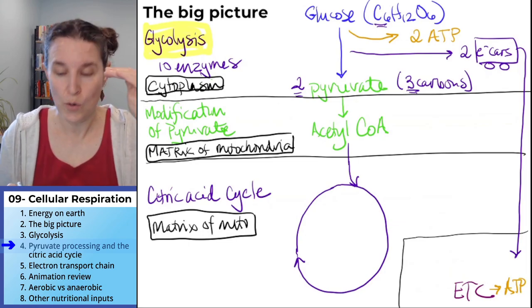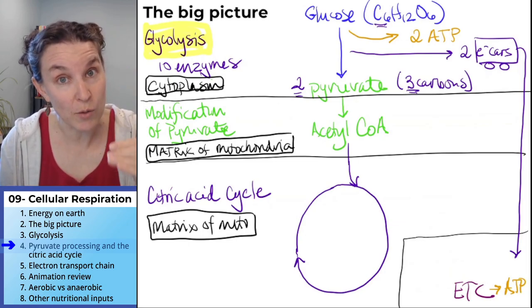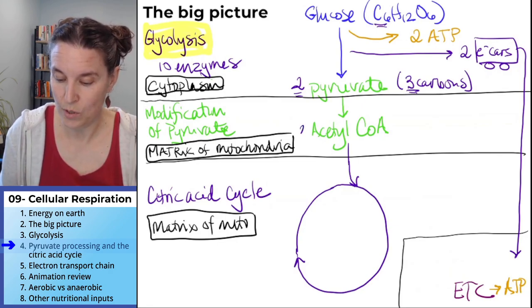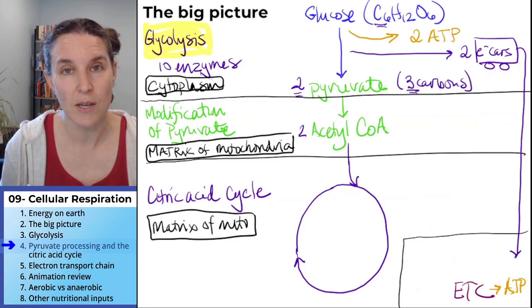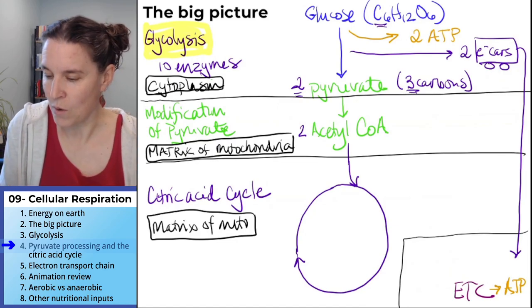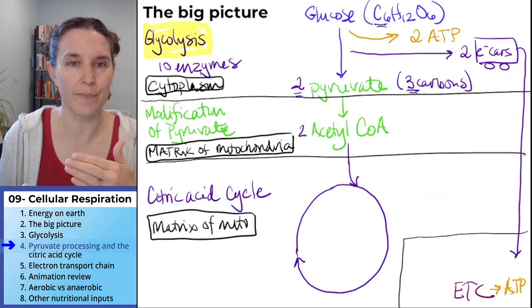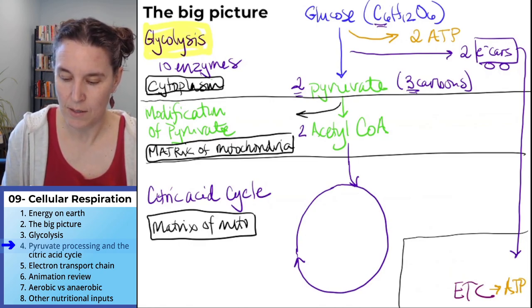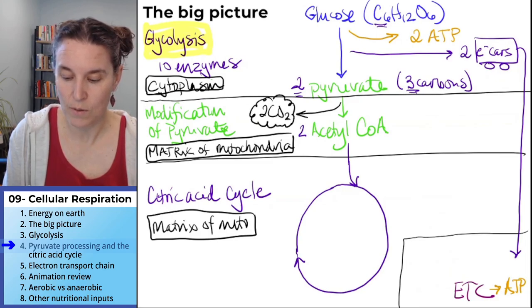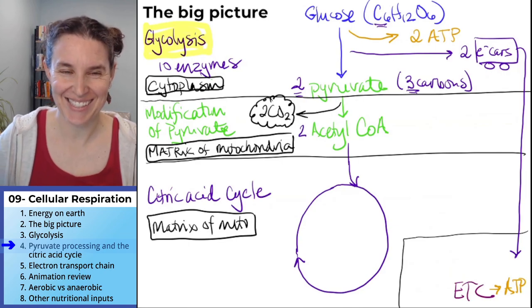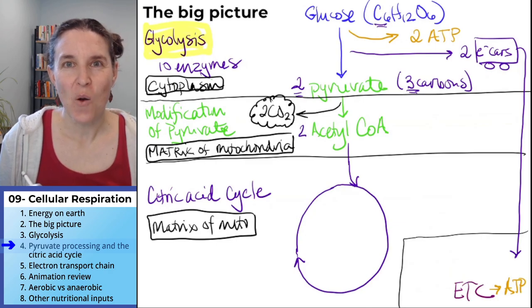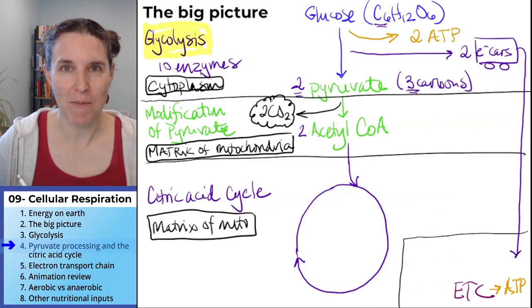First of all, those two pyruvate molecules are going to be transformed into two acetyl-CoA molecules. I'm about to tell you one byproduct of this process. We get two CO2. That's making it gassy. We get two molecules of carbon dioxide. Where did the carbons come from, my friends?